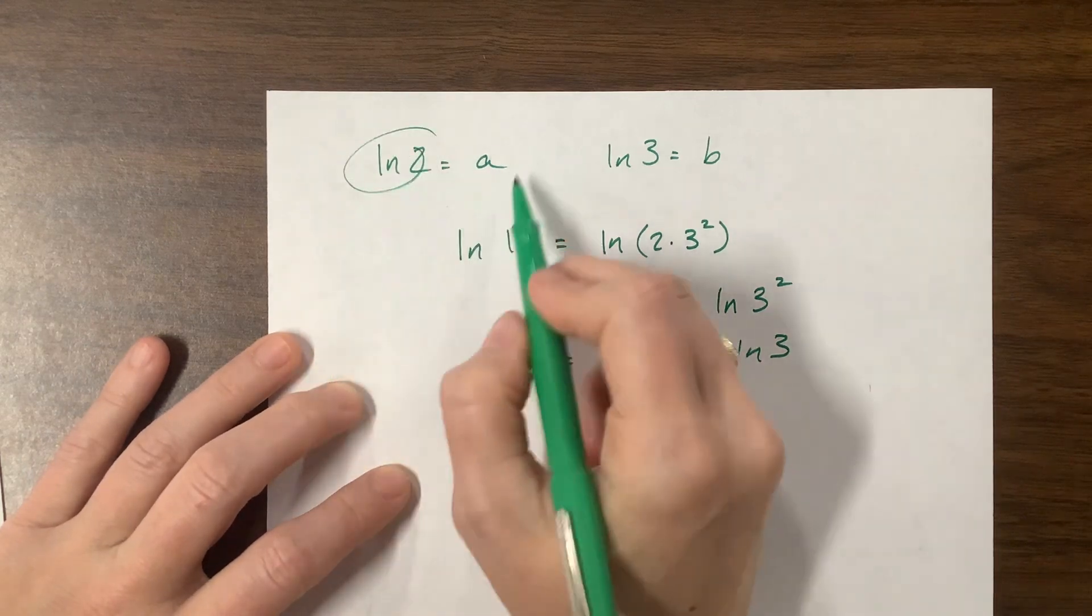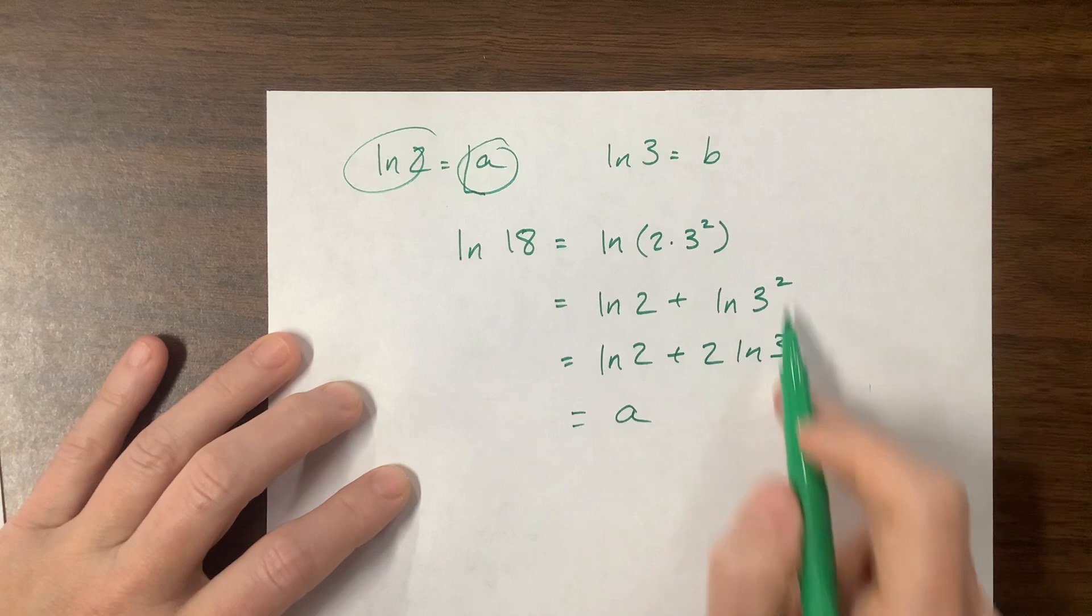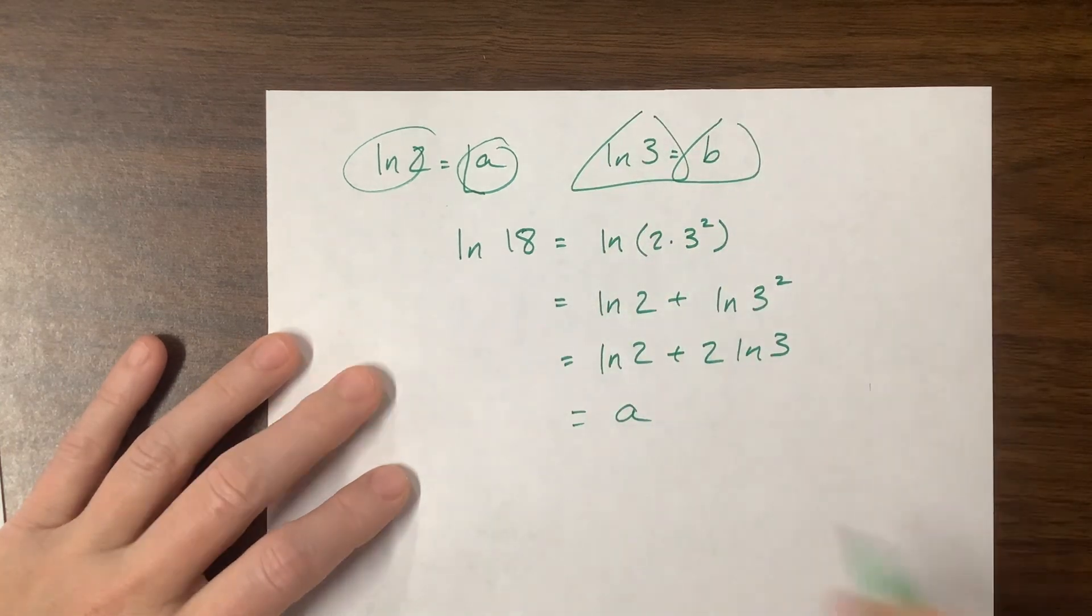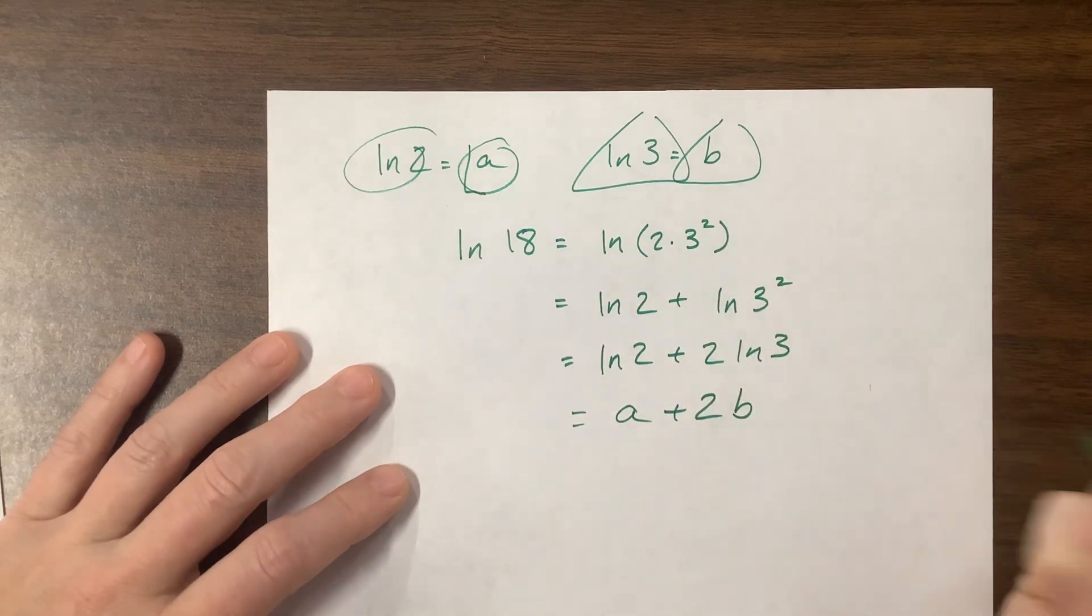And now what I know is that the natural log of 2 is equal to A. So I can substitute that out. Natural log of 3 right here, I don't know why I'm using circles and triangles, but whatever, is this is plus 2, the triangle was B.